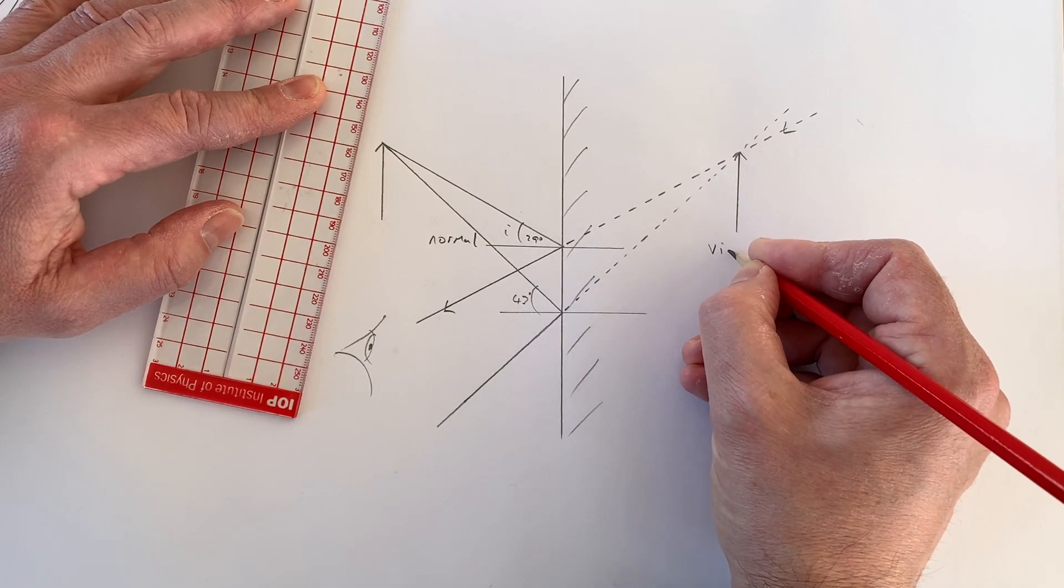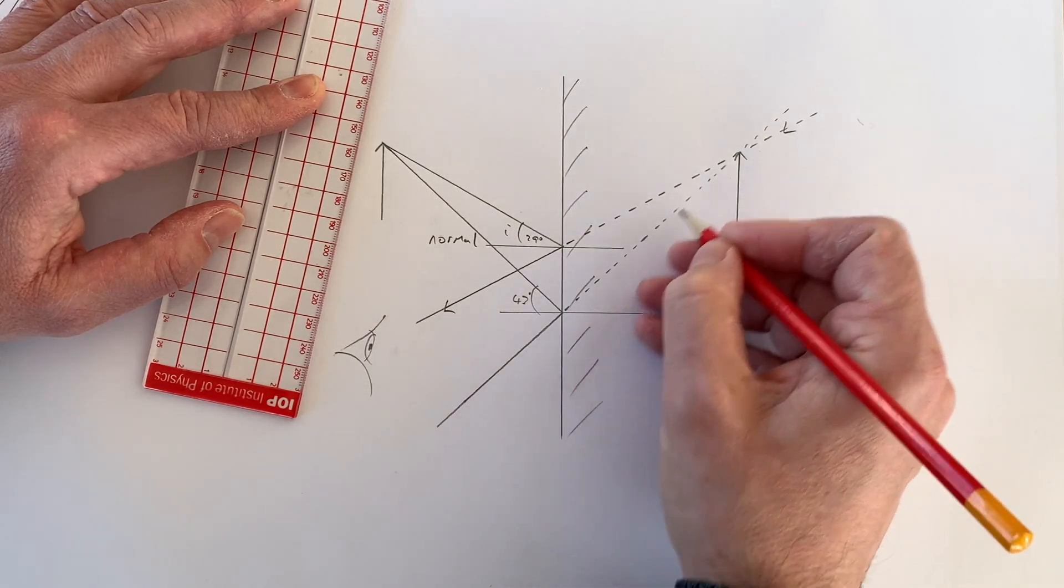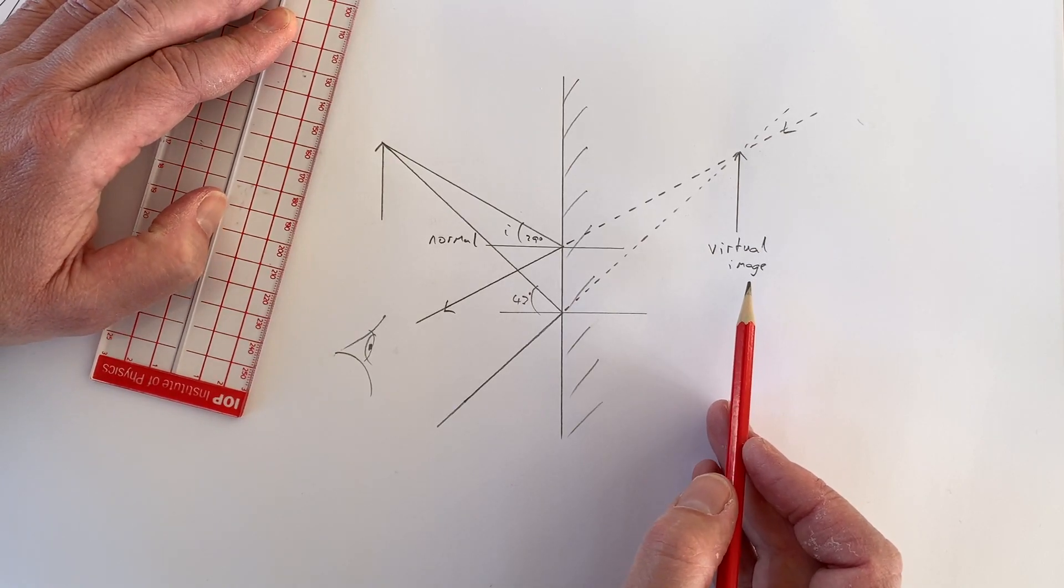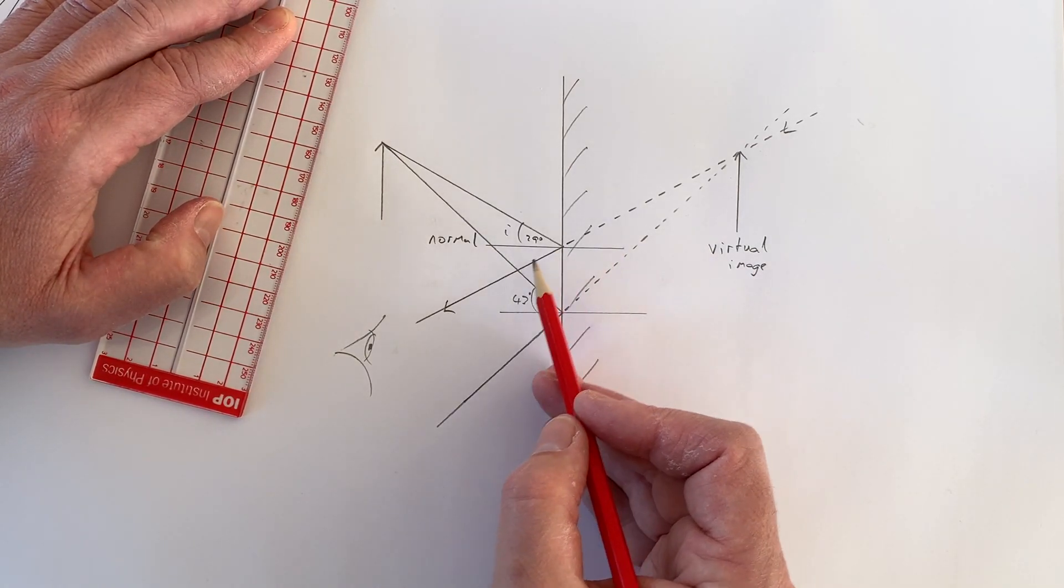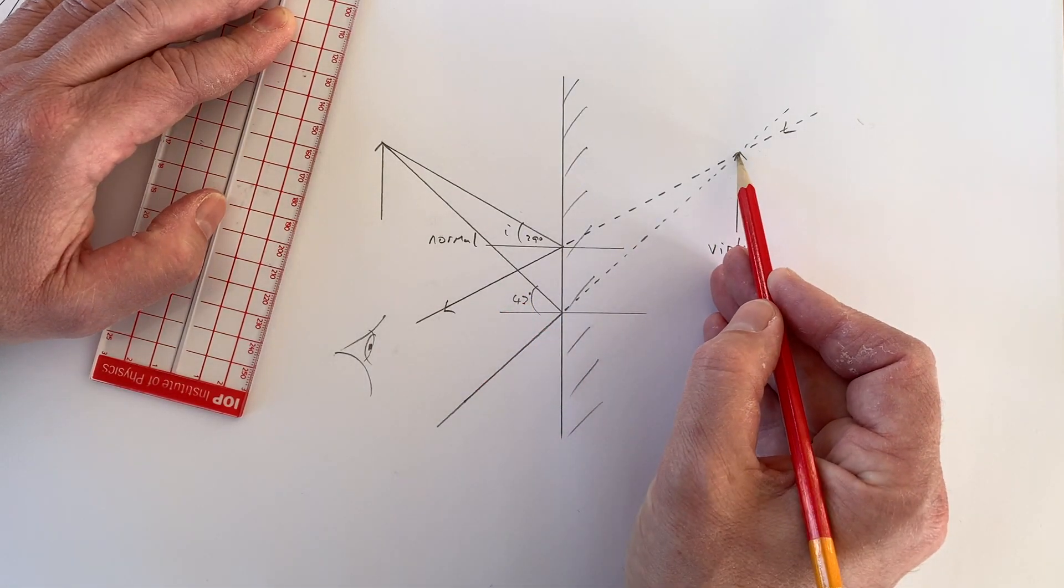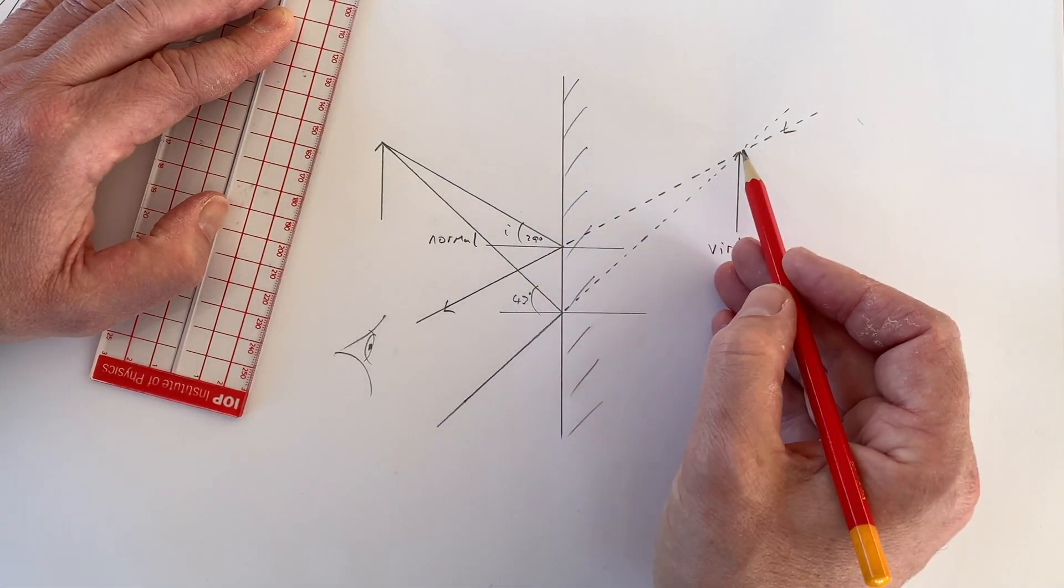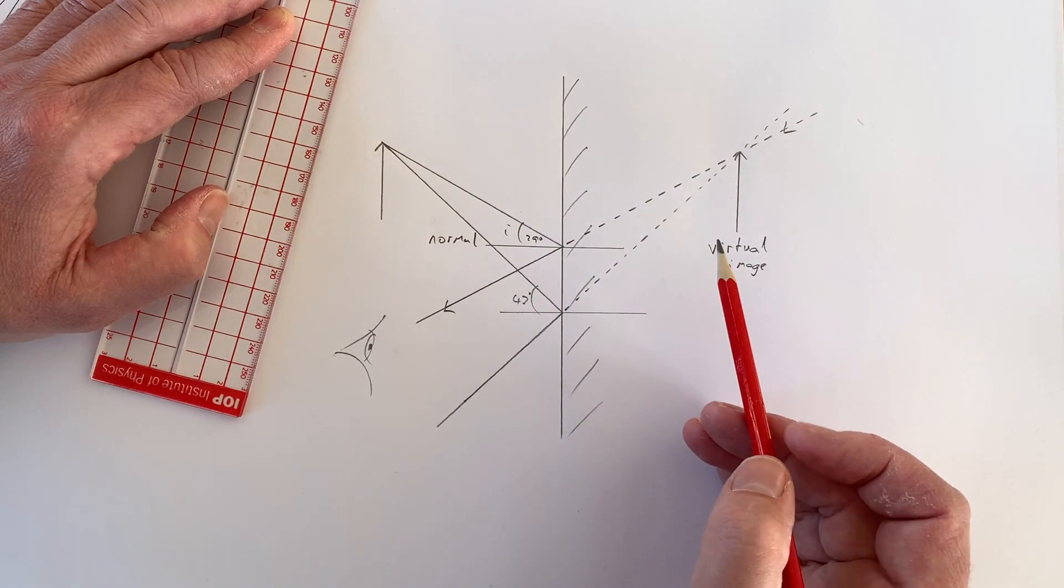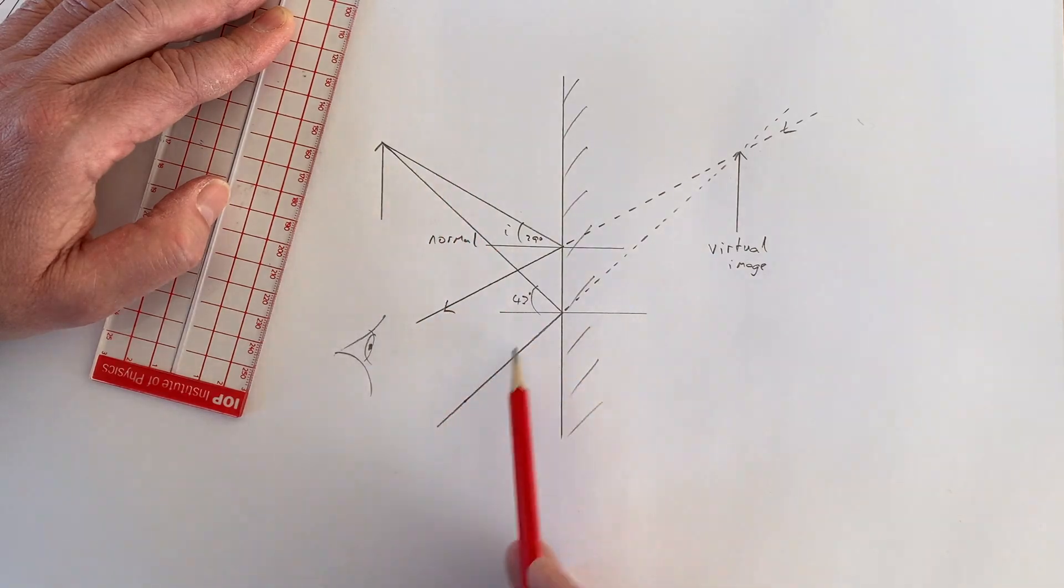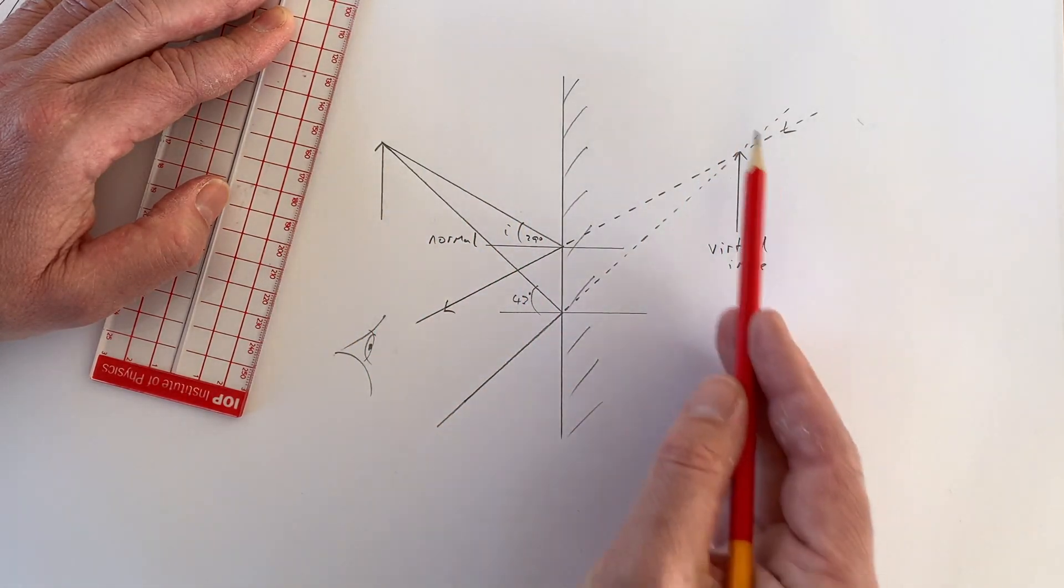And this is what we call a virtual image, formed by virtual rays. A virtual image, the official definition is that it's an image that is formed by the divergence, meaning the spreading out of rays from a point. But, quite commonly, people use a simpler definition. It is an image that is formed when the light doesn't actually go through the image. If you look at this image, the light is all located on the left of the mirror, but the image, in this case, is located on the right.